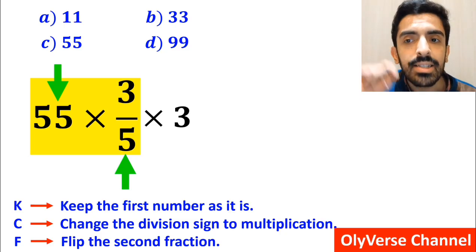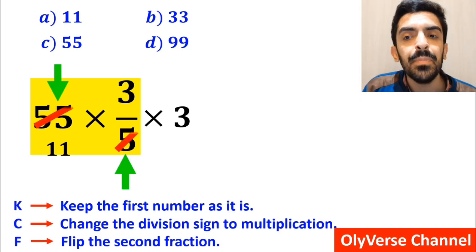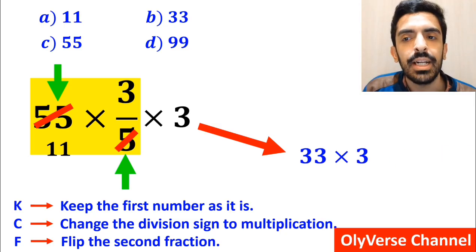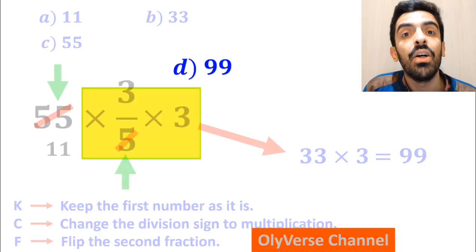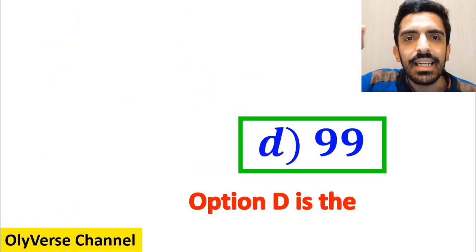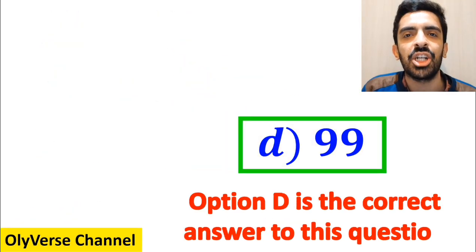As you can see on the screen, the number 55 simplifies with the 5 in the denominator. Instead of this expression, we can write 33 multiplied by 3, which ultimately gives us the answer 99. Therefore, option D is the correct answer to this question.